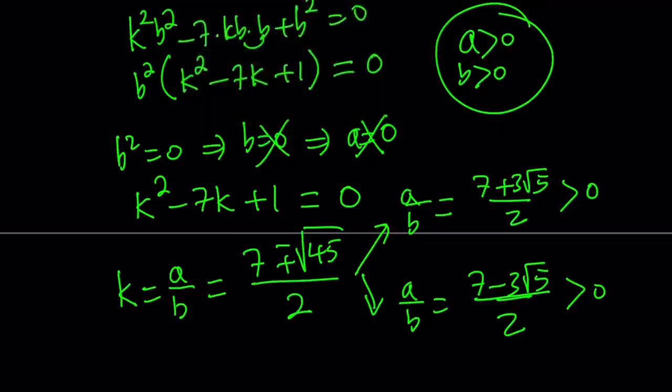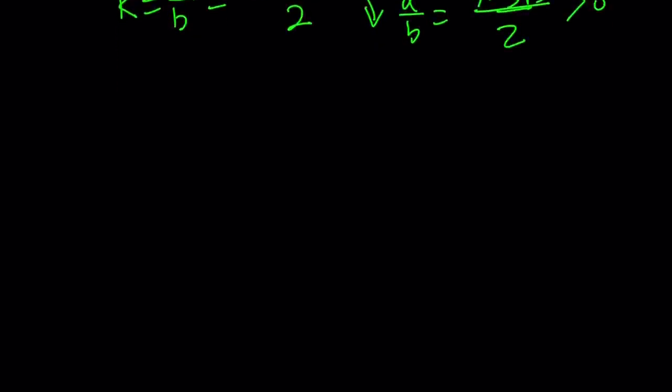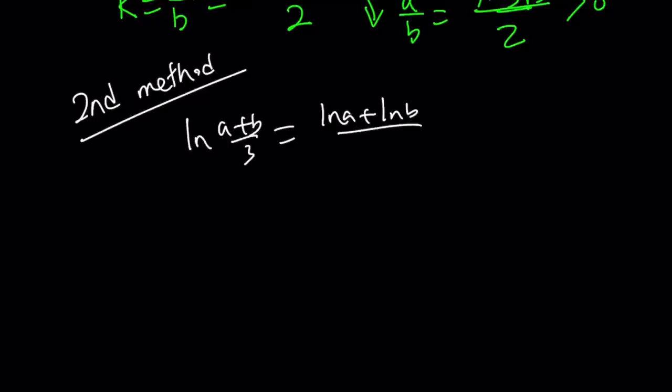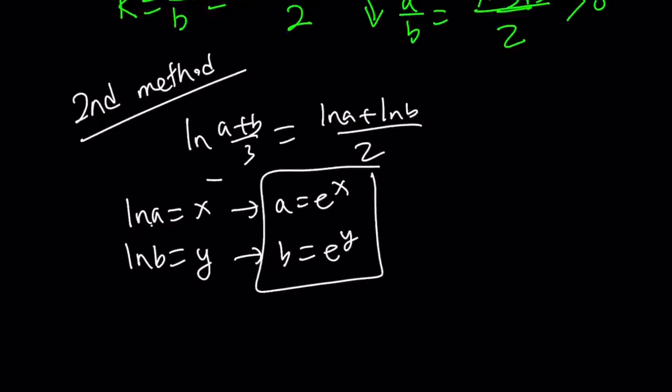Alright, so let's go ahead and take a look at the second method. For my second method, I'm going to use substitution. But let me rewrite the problem for you one more time. We have this equation, and I'm going to replace ln(a) with x, and I'm going to replace ln(b) with y. From definition of logs, this means a equals e^x, and this means b equals e^y.